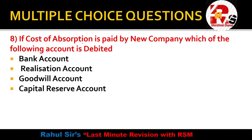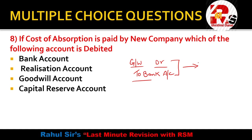Next question: If the cost of absorption is paid by the new company, which account is debited? Costs like cost of liquidation or cost of amalgamation, if paid by the new company — options are bank account, realization account, goodwill account, or capital reserve account. As discussed in the last lecture, the journal entry is: Goodwill Account debit to Bank Account. So in case of absorption, goodwill account will be debited.